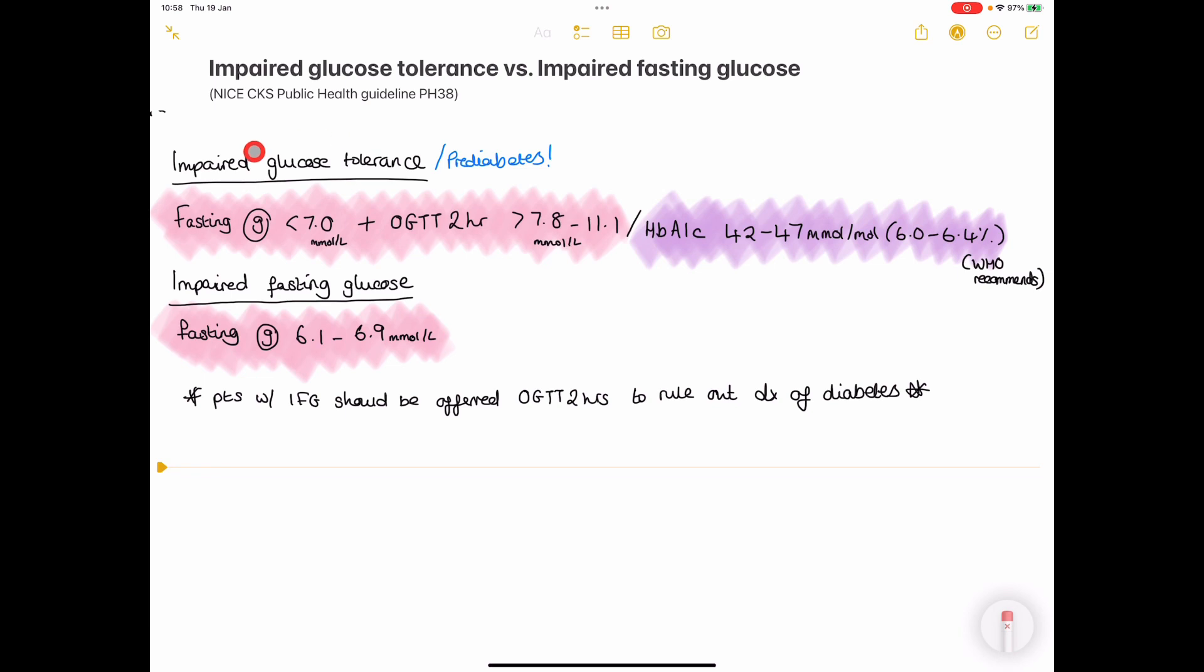This situation shows that you have some impaired glucose tolerance and it puts you at a much higher risk. A lot of patients will then go on to develop diabetes.